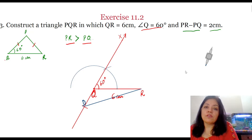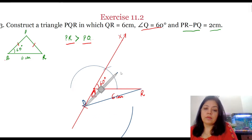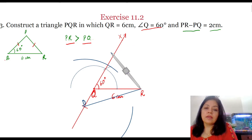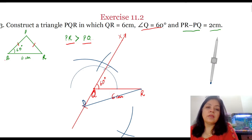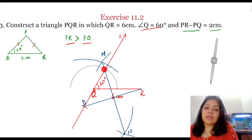Let us draw the perpendicular bisector of DR. To draw the perpendicular bisector of DR, we will place our compass at point D and with a radius greater than half of DR, we will draw two arcs above and below DR. Then with the same radius, we will place our compass at R and cut these two arcs above and below DR. Let these two points be M and N. On joining these two points, we will get the perpendicular bisector of DR, and this perpendicular bisector cuts the ray QX at this point. So this point is point P, that is the vertex P of the triangle PQR.